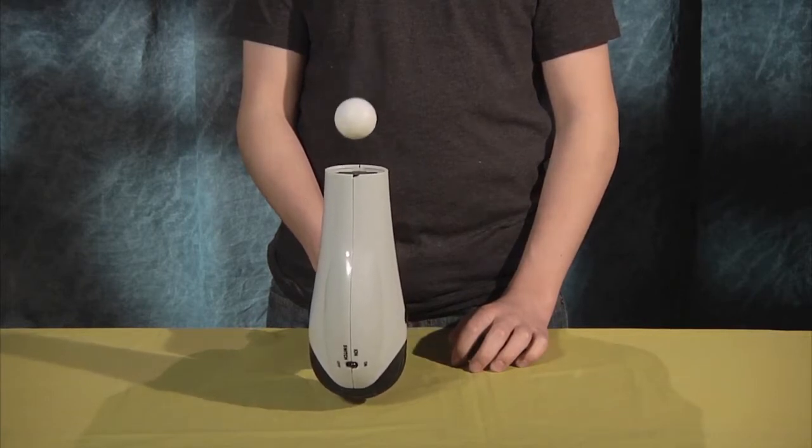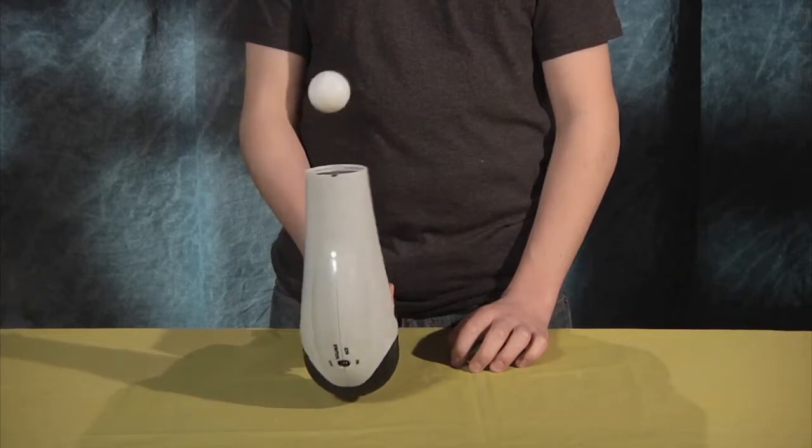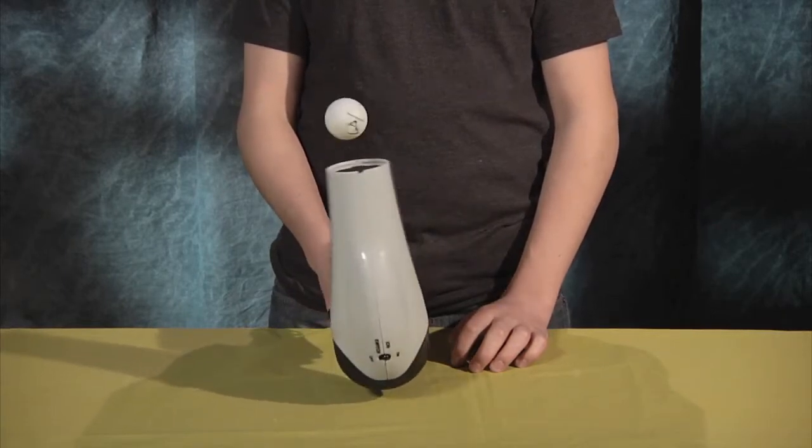Now, you can change the angle of the blow dryer by moving it from left to right. The ping pong ball will remain inside the stream of air even as it is moved from side to side.